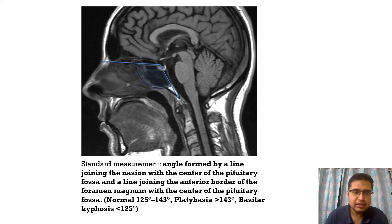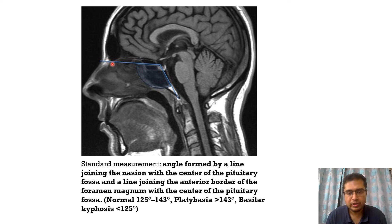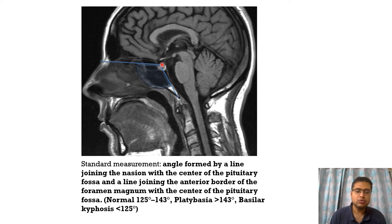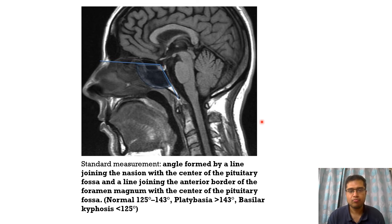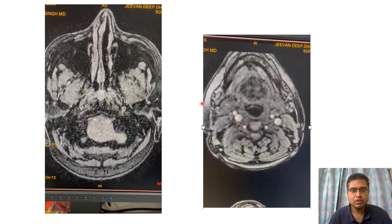The Welcher basal angle is formed by a line joining the nasion with the center of the pituitary fossa and a line joining the anterior border of the foramen magnum with the center of the pituitary fossa. Normally it is 125 to 143 degrees; platybasia is defined as more than 143 degrees.